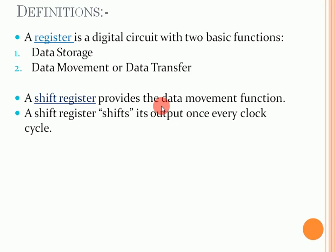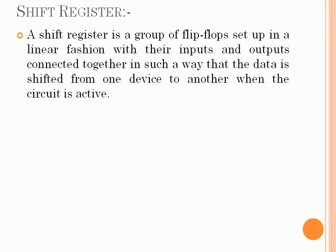A shift register provides the data movement function. A shift register shifts its output once every clock cycle — that means when a clock cycle is provided to the shift register, a shift occurs with each and every clock pulse. A shift register is a group of flip-flops set up in a linear fashion with the inputs and outputs connected together such that data is shifted from one device to another when the circuit is active.